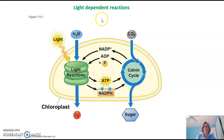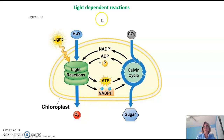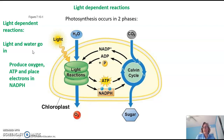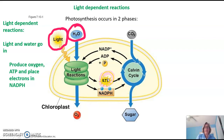We can see here a chloroplast with the two phases of photosynthesis depicted. The light-dependent reactions, which occur in the thylakoid membranes, are shown on the left hand side. This is where light and water go into the thylakoid membrane and produce ATP and electrons held onto by a molecule called NADPH. Oxygen is also produced in this process as a waste product.